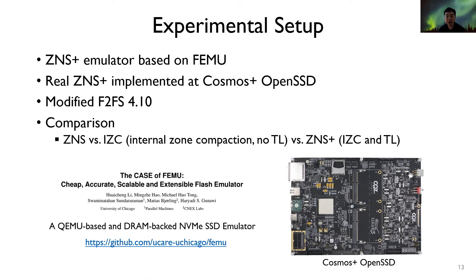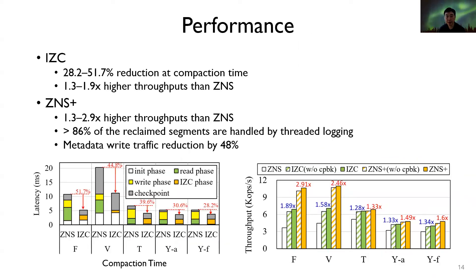We implemented the ZNS+ SSD emulator with FEMU, a QEMU-based SSD emulator. We also implemented a real ZNS+ SSD device by modifying the firmware of the Cosmos Plus Open SSD platform. F2FS version 4.10 was used. We compared the performance of three different ZNS implementations: the original ZNS, IGC which supports internal zone compaction, and ZNS+. IGC reduced zone compaction time by removing host-level copy overhead and utilizing copyback operations, presenting up to 1.9 times higher throughput than ZNS. ZNS+ showed up to 2.9 times higher throughput than ZNS, because more than 86% of reclaimed segments were handled by threaded logging in ZNS+.